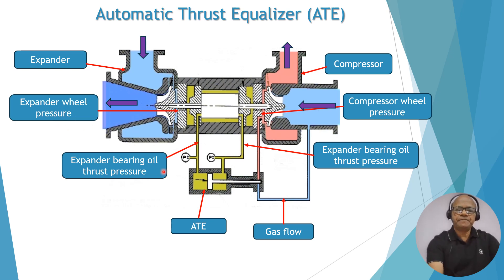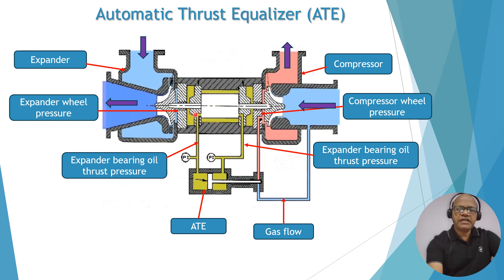The same arrangement is shown here. This is the expander inlet process gas, and the expander wheel pressure is visible here, along with the expander outlet. Similarly, this is the compressor suction and compressor discharge. This is the compressor wheel pressure and this is the expander wheel pressure. The bearing is fixed for both the expander and compressor sides while the rotor or shaft moves. When the shaft moves in one direction, the clearance decreases, and because of this the oil thrust pressure increases.